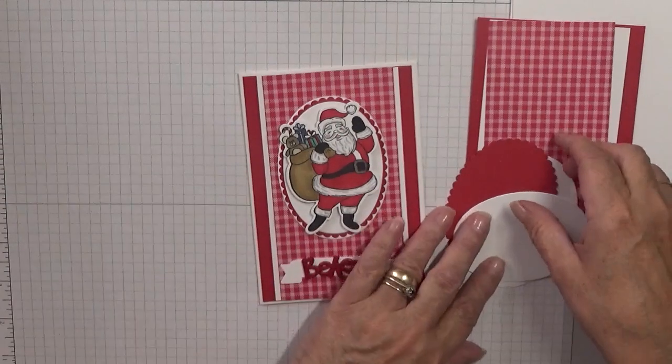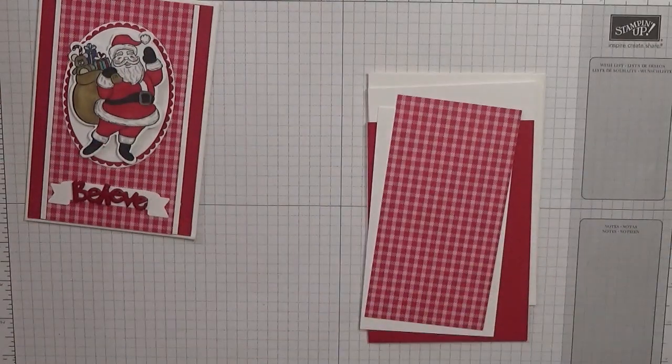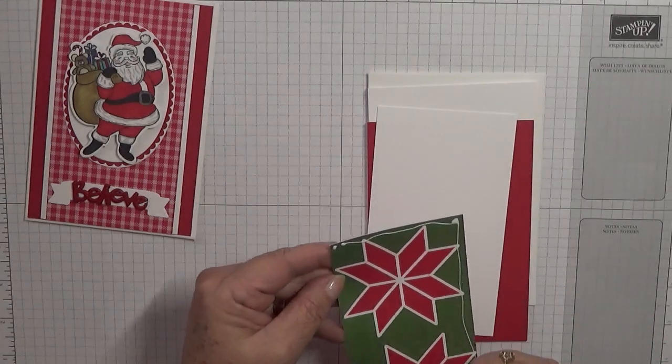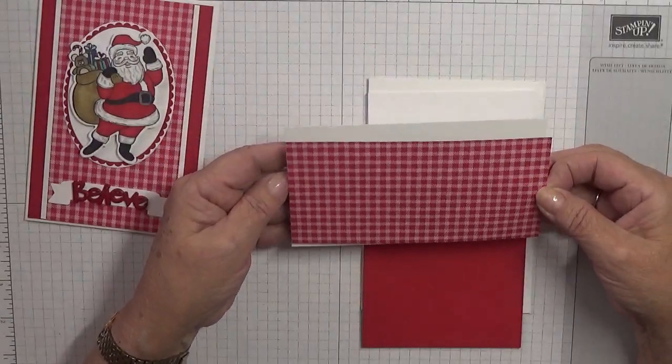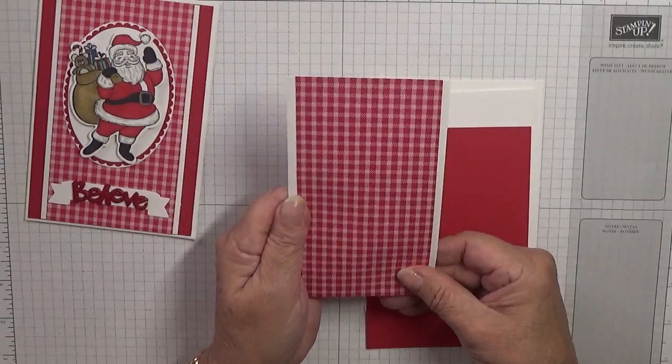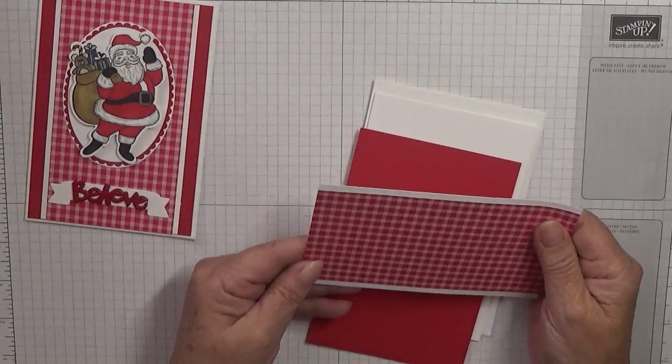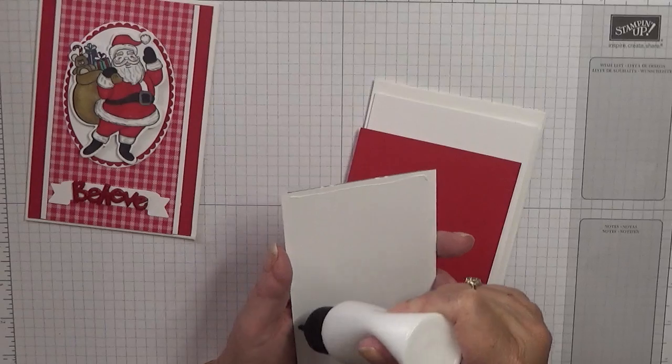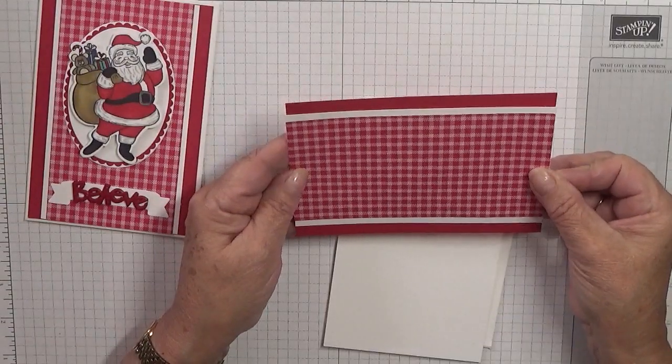To get started, let's glue all this down first. Glue the checked paper down onto this white piece leaving a border, hopefully even. Then we'll glue this onto the red real red, hopefully even.